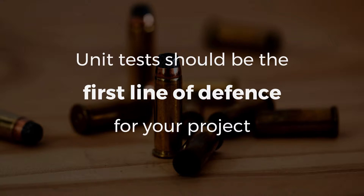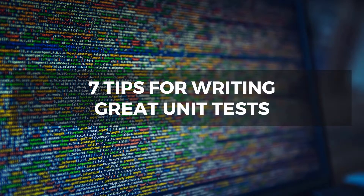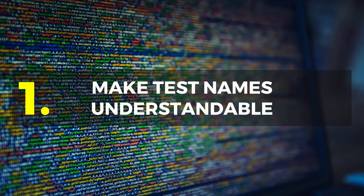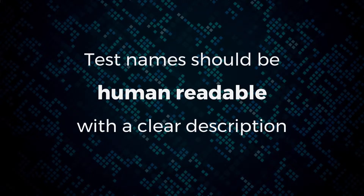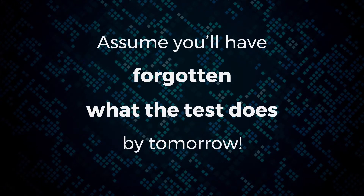If the unit tests fail, you know there's something wrong in your code. So let's give you seven tips for writing great unit tests. Number one: make the test names understandable. These tests are for humans, not for the computer, so you should make them human readable with a really clear description. I always assume I'll have forgotten what the test does by tomorrow, so I need to make sure I'm very clear in what the test is called.